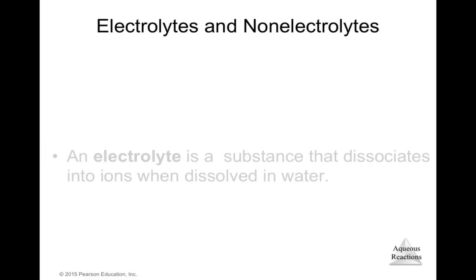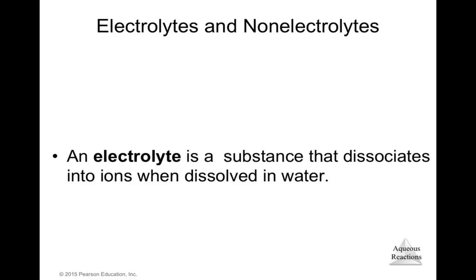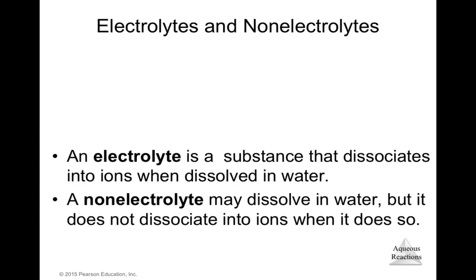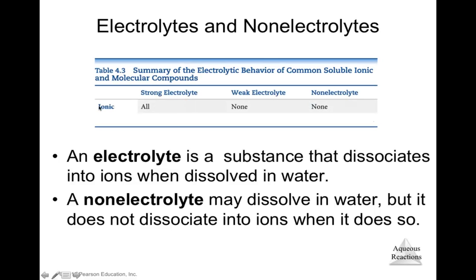An electrolyte is a substance that dissociates into ions when dissolved in water, while a non-electrolyte may dissolve in water but does not dissociate into ions. Ionic compounds are all strong electrolytes. Among molecular compounds, strong acids are strong electrolytes, weak acids and weak bases are weak electrolytes, and all other compounds are non-electrolytes.